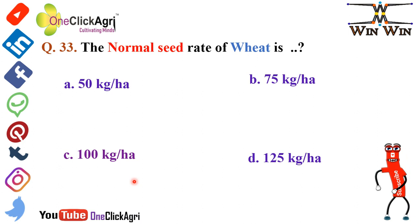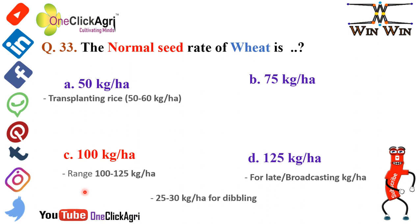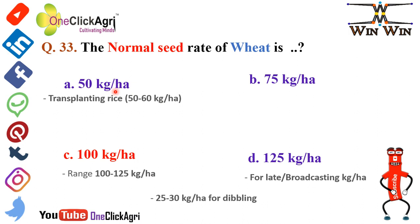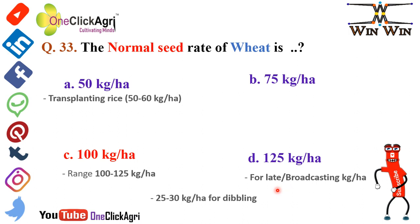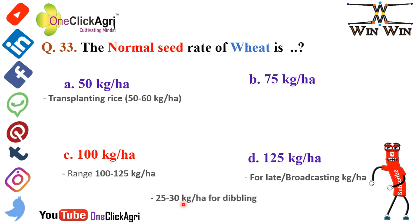Question number 33: The normal seed rate of wheat is 100 kg per hectare. If a range is given in the question, go for 100 to 125 kg per hectare. The 50 kg per hectare is the transplanting rice seed rate, ranging between 50 to 60 kg per hectare. The 125 kg per hectare is for late sowing and broadcasting of wheat. Another seed rate is 25 to 30 kg per hectare for dibbling wheat.